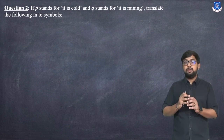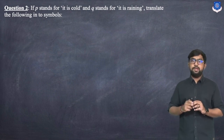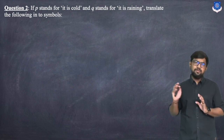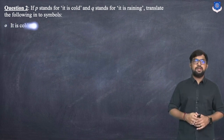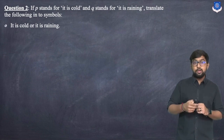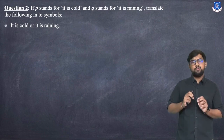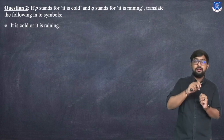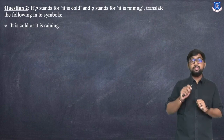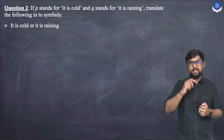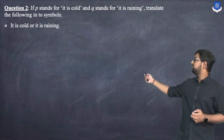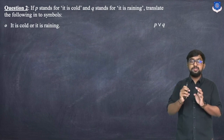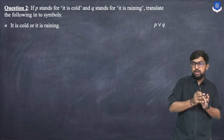Second example: P stands for 'it is cold' and Q stands for 'it is raining.' Translate the following into symbols. First: 'It is cold or it is raining.' P = cold, Q = raining, and OR is the ∨ symbol, so the symbolic form is P ∨ Q.